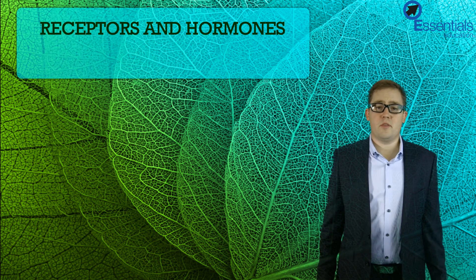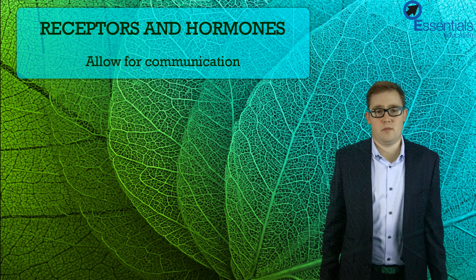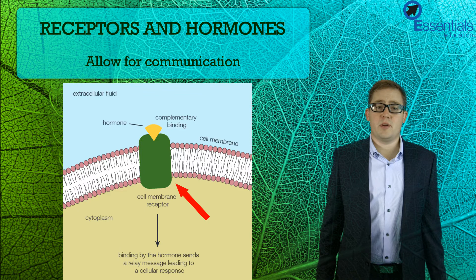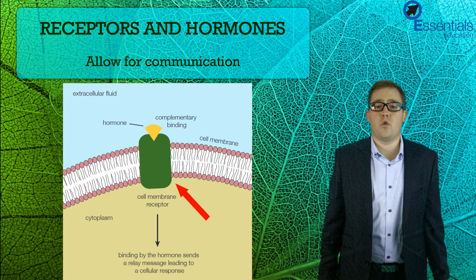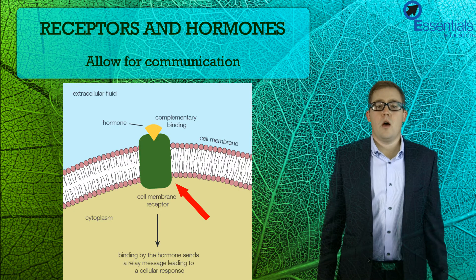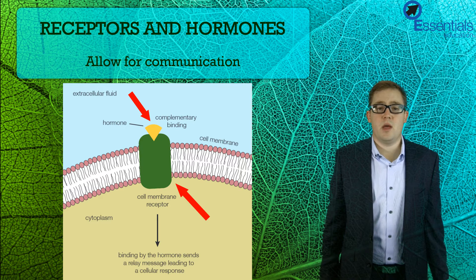Receptor proteins and hormones are proteins which work together to allow for communication between cells. Receptor proteins bind to membranes and contain a unique binding site for molecules such as hormones to bind to. Hormones themselves are 3D proteins that allow for communication between cells by binding to the complementary receptor proteins and transmitting messages.